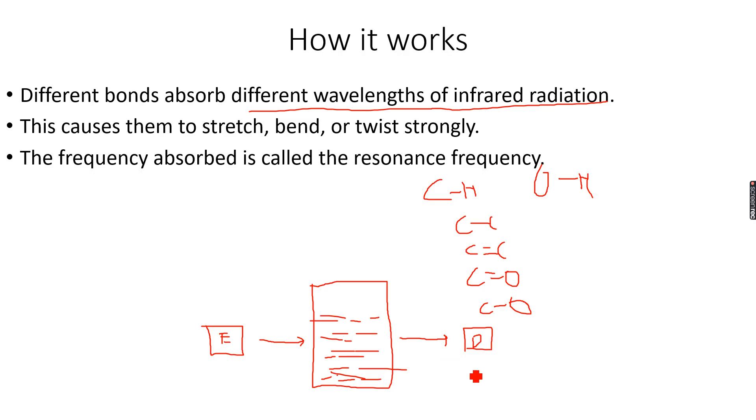By this method, knowing what frequencies are absorbed, we can deduce the type of bond present in the molecule. Every different bond absorbs a different frequency, and in your data booklet you have ranges for all the frequencies absorbed by different bonds. If you know the frequency that is absorbed, you will know the bond present in the molecule. That's how you can deduce the bonds present.